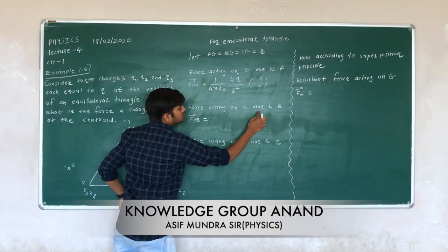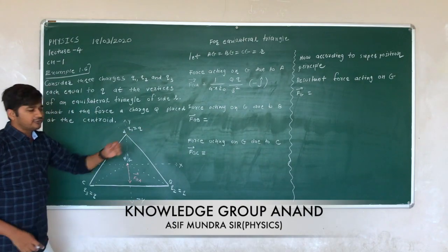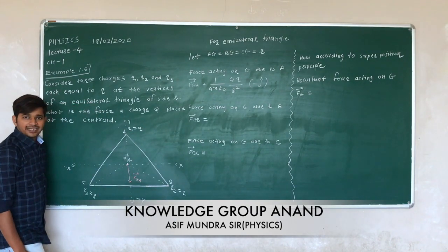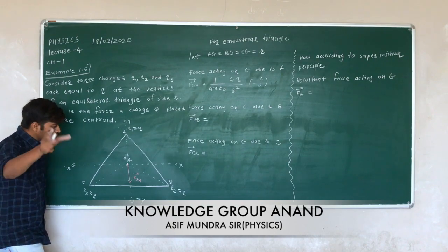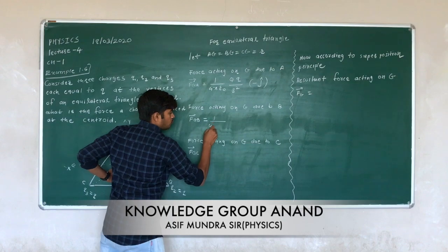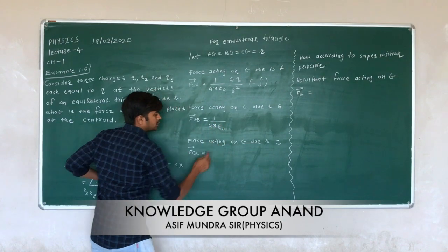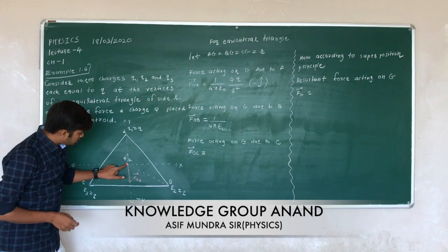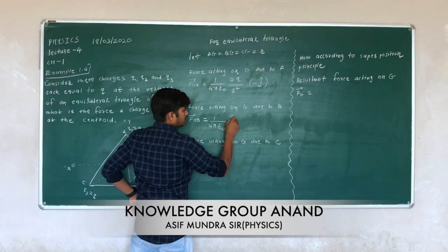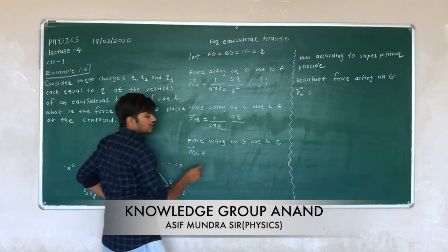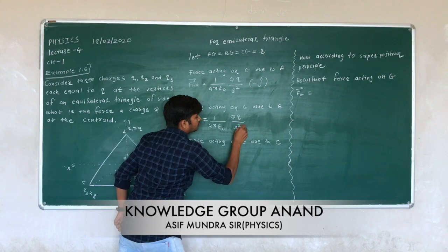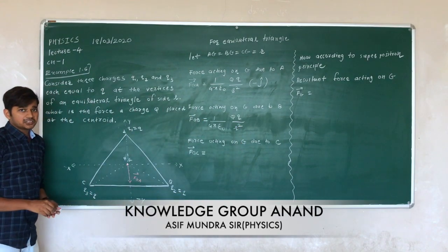Next, force acting on G due to B — F_GB. First, the magnitude: 1 over 4πε₀, charge on G is Q, charge on B is Q, so it is Q·Q. BG is equal to R, so it is R squared. The magnitude of F_GB equals (1/4πε₀)(Q²/R²).